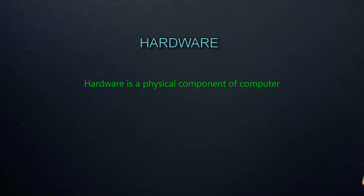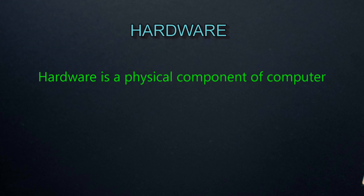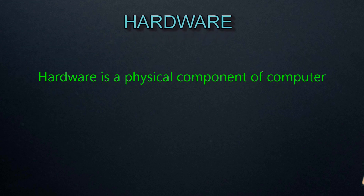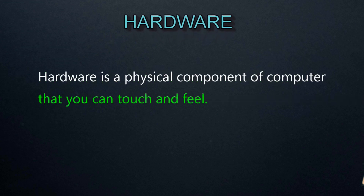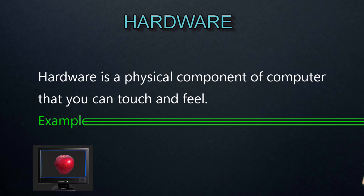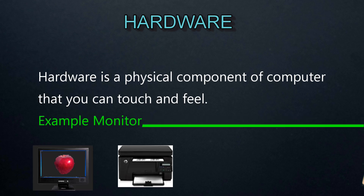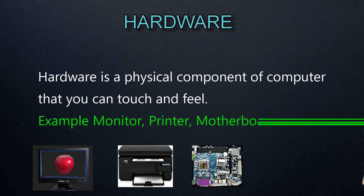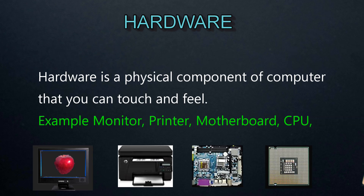Computer hardware is a physical component of a computer that you can touch and feel. For example, monitor, printer, motherboard, CPU, etc. All these components we can touch and feel. All physical parts are called hardware.